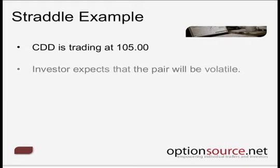In this particular scenario, we may believe that the CDD has been particularly range-bound over a certain period of time, and we feel, based on our market outlook or currency outlook, that there has to be a move. Something has to give. In other words, this particular pair value can't trade sideways forever. They can do it for an extended period of time, but at some point you would assume that a decision has to be made with respect to a breakout in either direction.